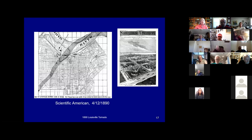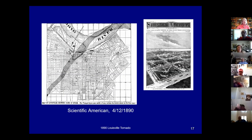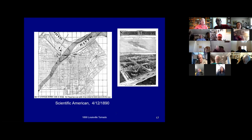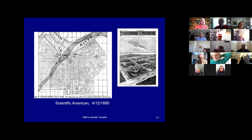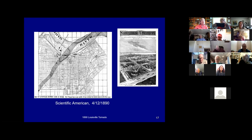This image from Scientific American — which has some fascinating timely articles — shows a slightly different, more precise track. You'll notice that in downtown, the track is a little bit wider. It comes right through downtown, expands out, then narrows as it hits the tip of Jeffersonville — but that's still a lot of damage in Jeffersonville — then comes back across to the right where the water tower was.